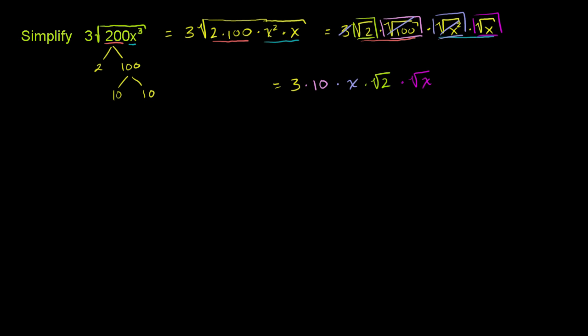we get 3 times 10 times x, which is 30x. And then we can actually merge these. This is the square root of 2 times the square root of x. That's the same thing as the square root of 2x. So we could say times the square root of 2x. And we have simplified this as far as it can go.